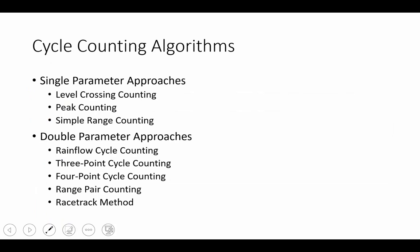How do we process that data? Well, there's a number of algorithms we can use. There are single parameter approaches, which are fairly simple, and then there are the double parameter approaches, which can be a little bit more challenging. Today, we're going to learn about all three of the simple parameters and one of the double parameter laws, which is rain flow.